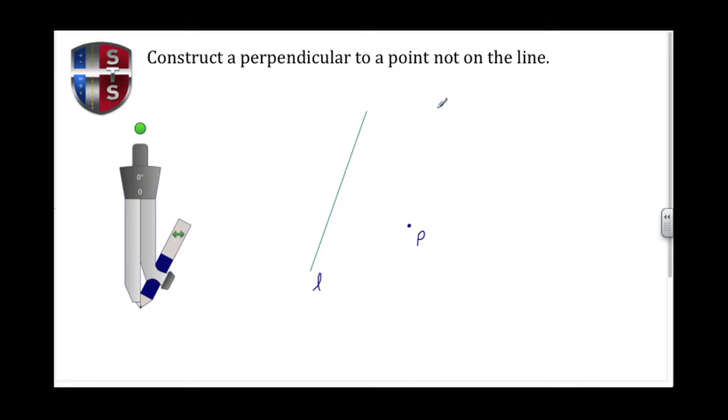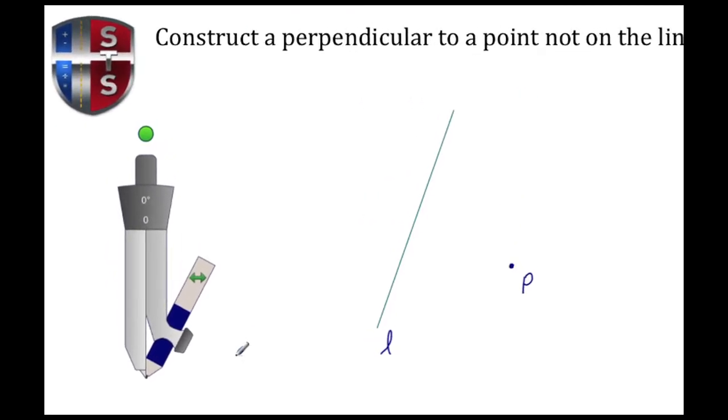Welcome back to Speller Tutorial Services. In today's video, we're going to construct a perpendicular to a point not on the line. In this case, we have line L, and sitting off to the right of L is point P out in space. We're going to create a perpendicular line that's 90 degrees in relation to line L and also crosses point P.